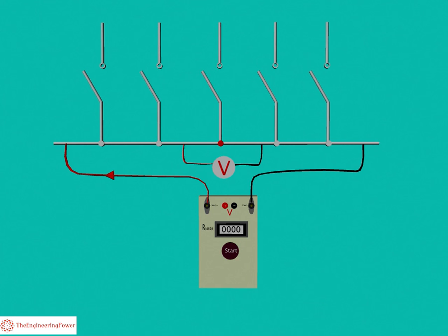For bus bar, the contact resistance value should be less than 5 micro-ohm. Next, we explain some of the precautions that must be adopted while performing the contact resistance test.